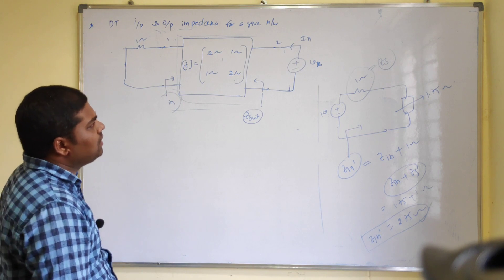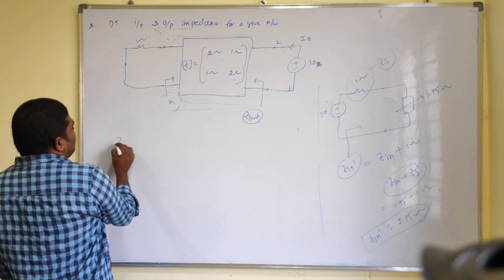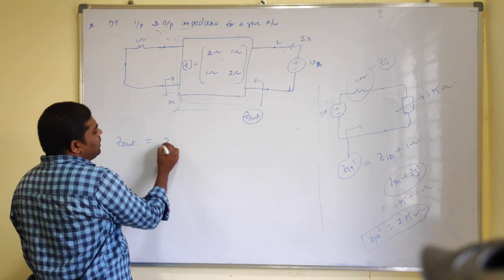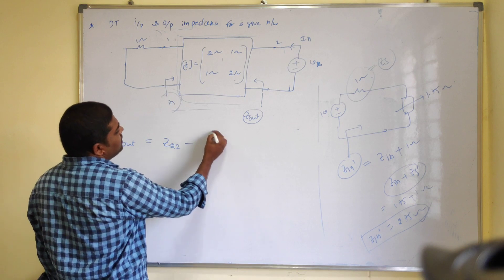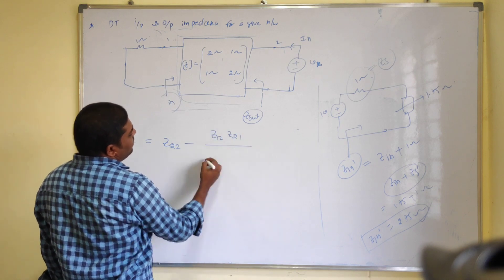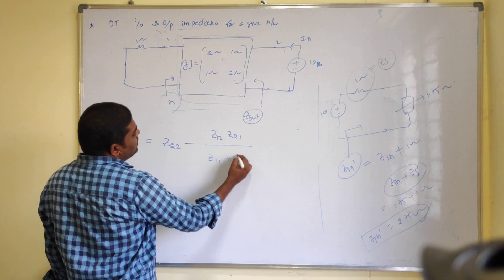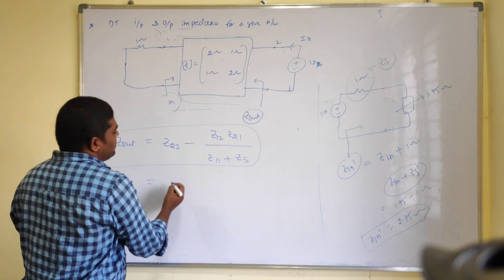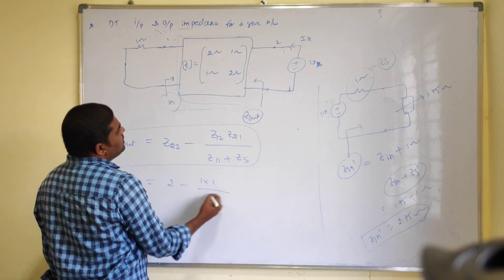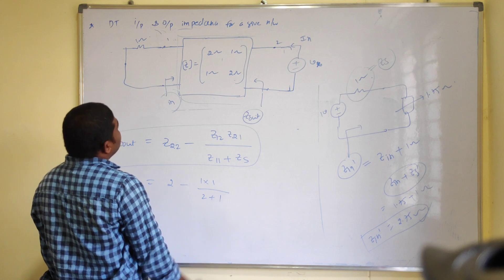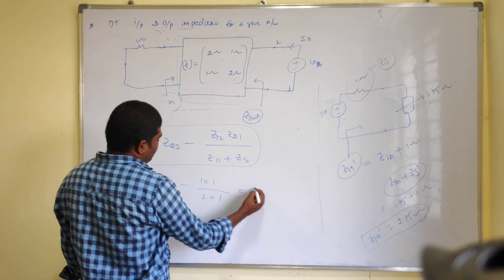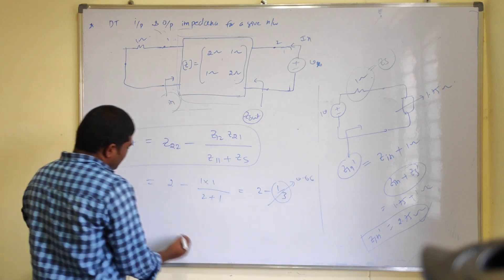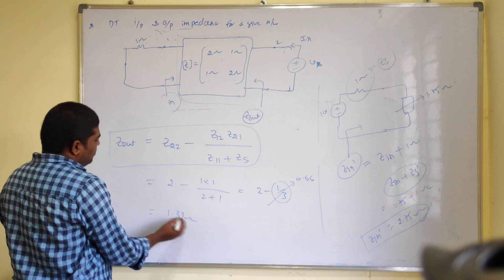The output impedance Z_out equals Z22 minus Z12 times Z21 divided by Z11 plus ZS. Substituting: Z_out = 2 minus (1×1)/(2+1) = 2 minus 1/3 = 2 minus 0.33 = 1.33 ohms. This is your output impedance.